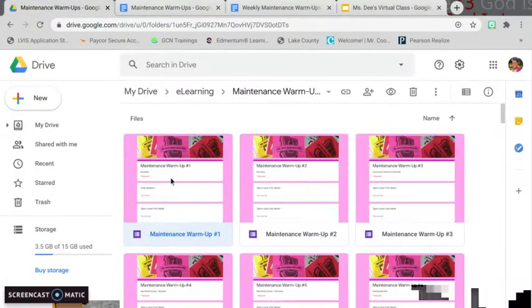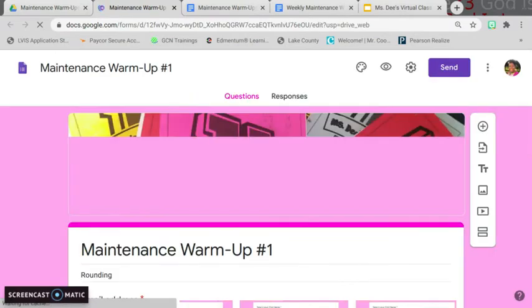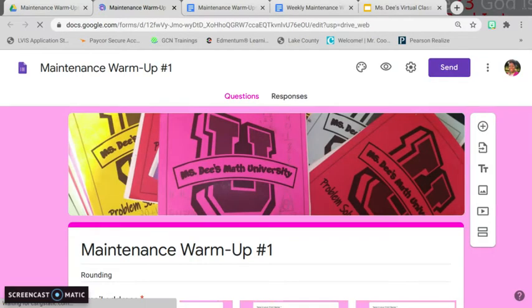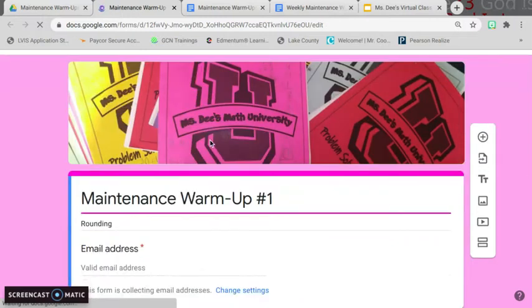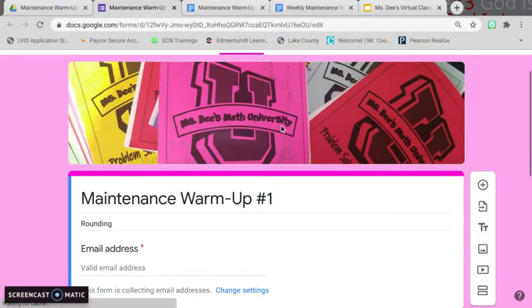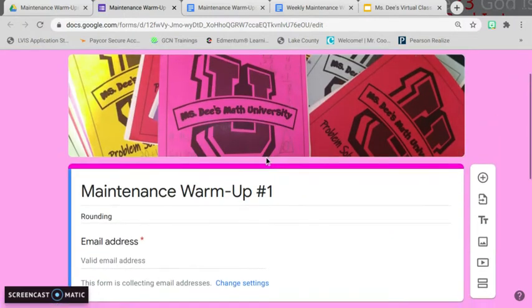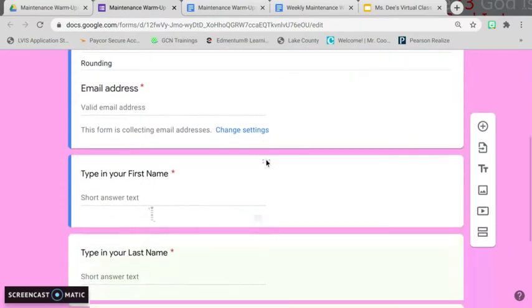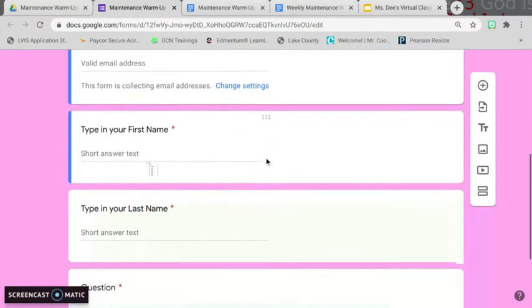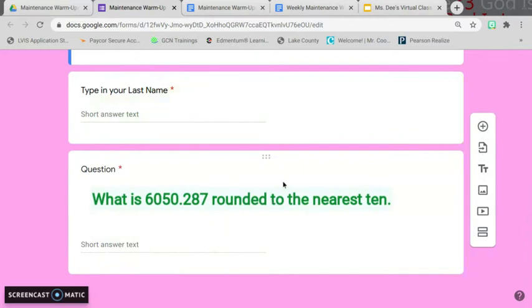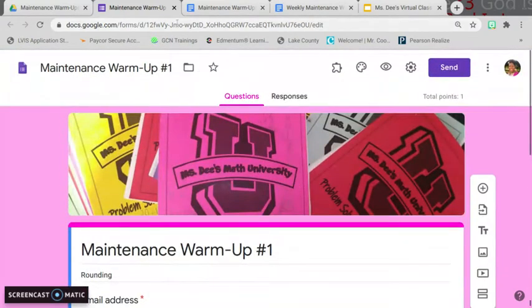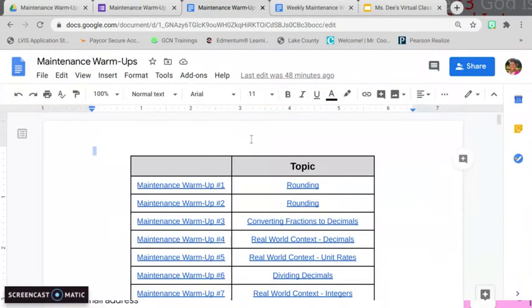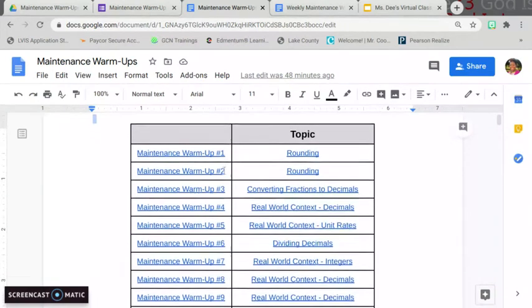What I did was I went to create a Google form that contained all of my warmups. And I'm going to show you how to do that in another video. But what I did was I created warmups, one through whatever. I think I went through day 70. And after I put my warmup question on there, I then took them and I organized them in this table right here. If you take a look, I have the maintenance number.